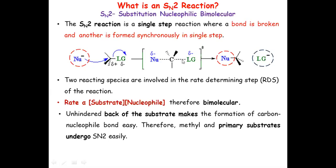Since it is a single-step reaction, that step becomes the rate-determining step for the SN2 reaction. In this step, both the nucleophile and the substrate are involved, so the rate of the reaction depends upon the concentration of both substrate and nucleophile. Therefore, the rate equation is written as: rate is directly proportional to concentration of substrate and nucleophile. Hence this reaction is called a bimolecular reaction.